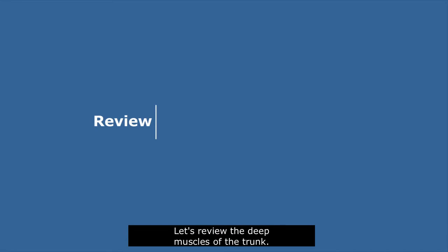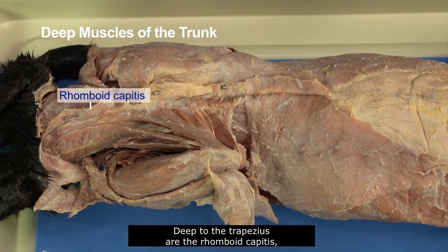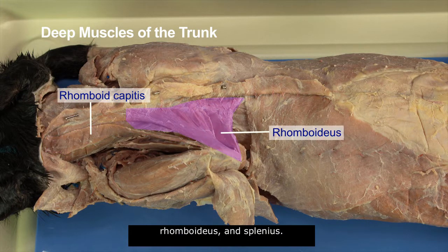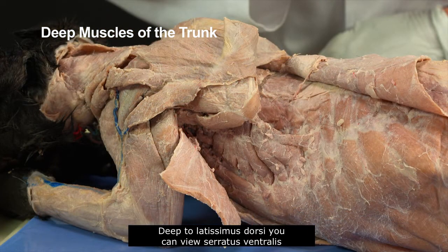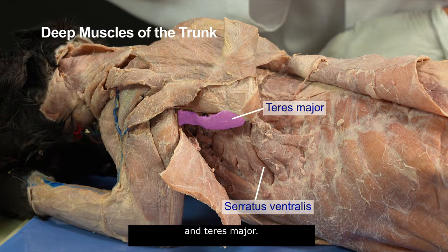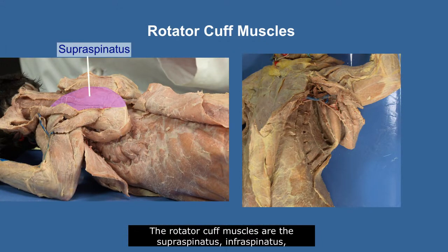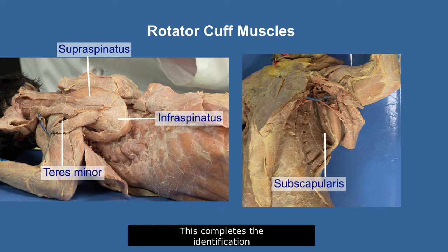Let's review the deep muscles of the trunk. Deep to the trapezius are the rhomboid capitis, rhomboideus, and splenius. Deep to latissimus dorsi, you can view serratus ventralis and teres major. The rotator cuff muscles are the supraspinatus, infraspinatus, teres minor, and subscapularis. This completes the identification of the deep muscles of the trunk on the dorsal side of the cat.